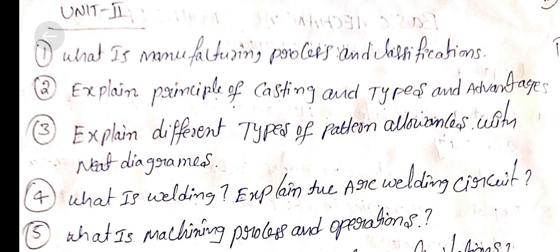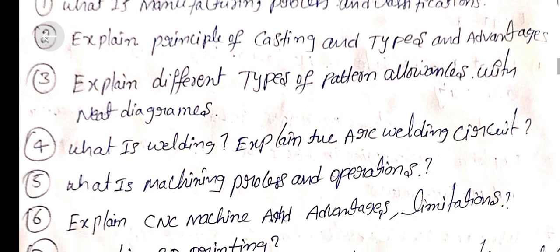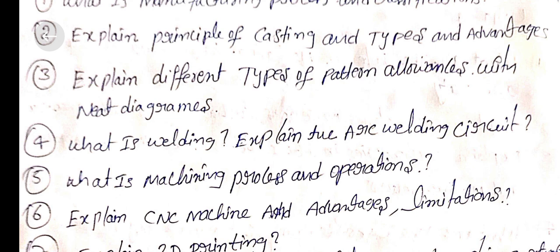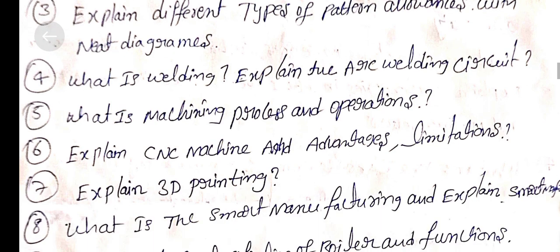Unit 2: Question 1: What is manufacturing process and its classifications? Question 2: Explain principle of casting, types, and advantages. Question 3: Explain different types of pattern allowances with neat diagrams. Question 4: What is welding? Explain the arc welding circuit.